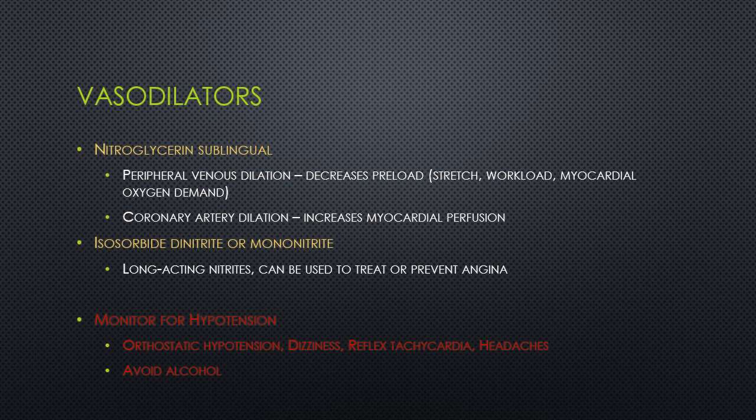Nitroglycerin is used sublingually. It can also be used as a patch or as an ointment topically through the skin, and we use it via IV route as well in critical care settings. Isosorbide dinitrate or isosorbide mononitrate is also a longer-acting nitrate used to treat or prevent angina, and can be used as sublingual or oral pill form taken multiple times a day, or given intravenously.